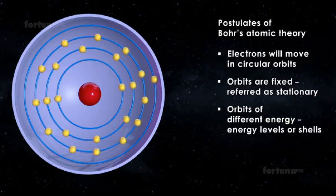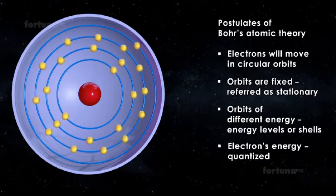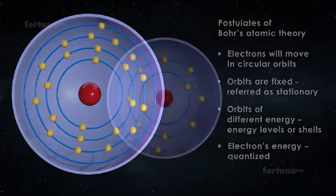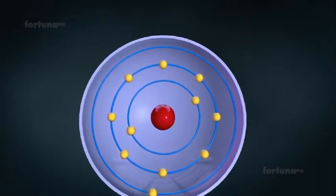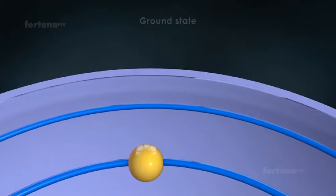He also described an electron's energy as quantized, meaning the electrons can be either one energy level or another but not in between. The energy level in which an electron normally orbits is said to be its ground state.